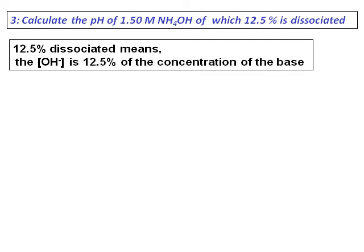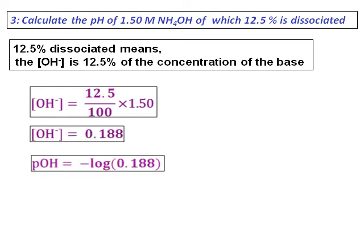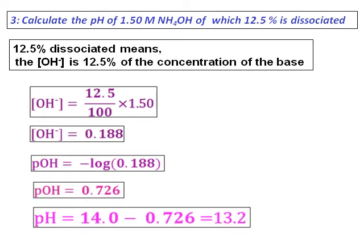So, I can calculate the concentration of hydroxide ions is 12.5 divided by 100 times 1.50. And from the concentration of hydroxide ion, I can get the value of pOH. And once I get pOH, I can get the value of pH.